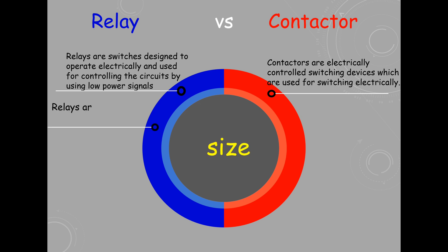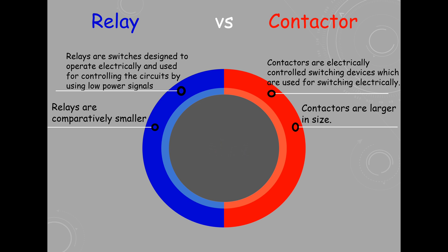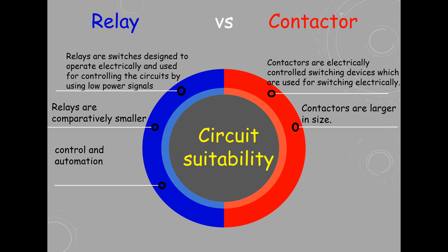Relays are comparatively smaller, while contactors are larger in size. Relays are mainly used in control, automation, and protection circuits. Contactors are used in power circuits.